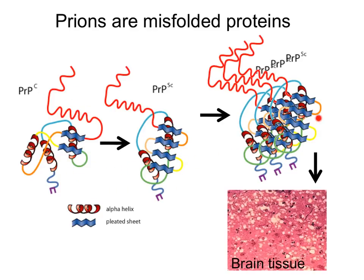So that's what a prion is. And these prions are acquired by eating tissue that has these prions, and then they will find their way into our normally folded proteins and cause them to misfold.